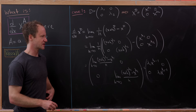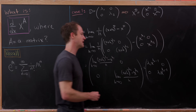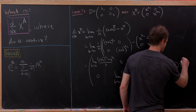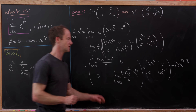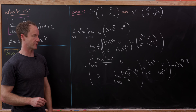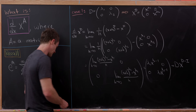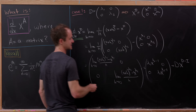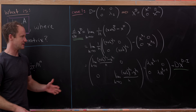That diagonal matrix actually factors nicely. After a bit of matrix arithmetic, you get D times x to the (D minus the identity matrix). This is a nice formula — it looks like the normal power rule for derivatives, except instead of subtracting 1, we subtract the identity matrix. So the derivative with respect to x of x^D is D times x^(D−I).